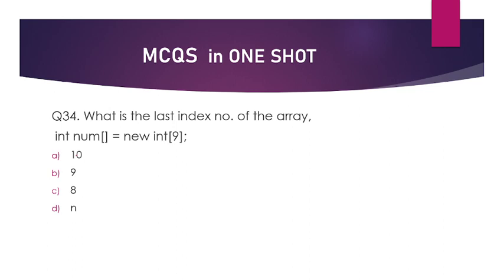What is the last index number of the array? int num = new int[9]. Its length is 9, so the last index will be length minus 1, that means 8. Option number C.